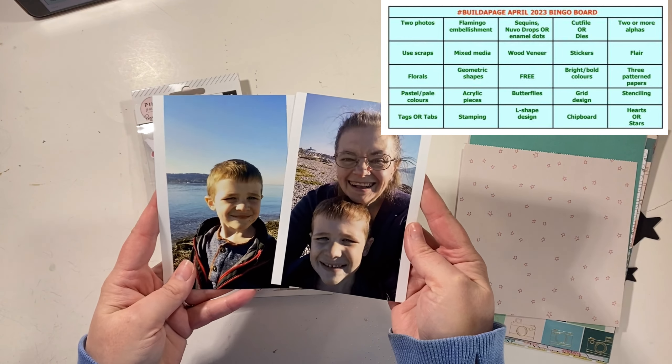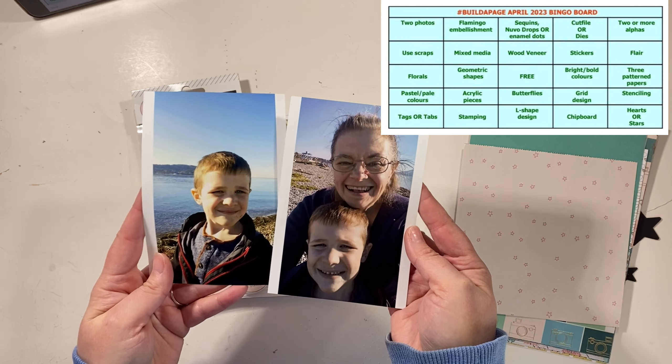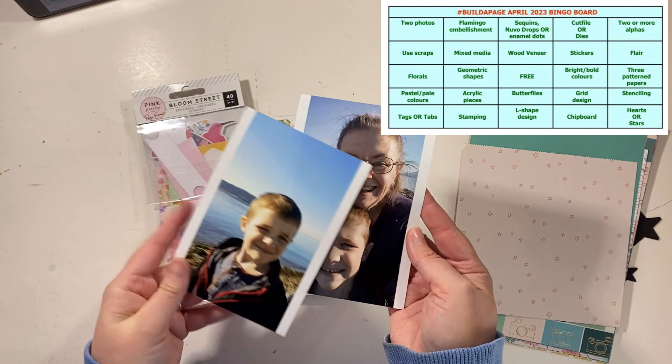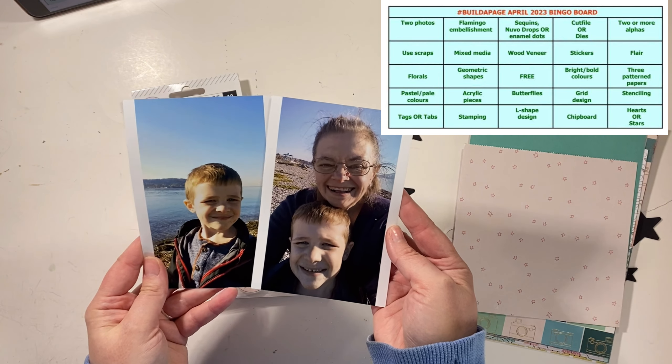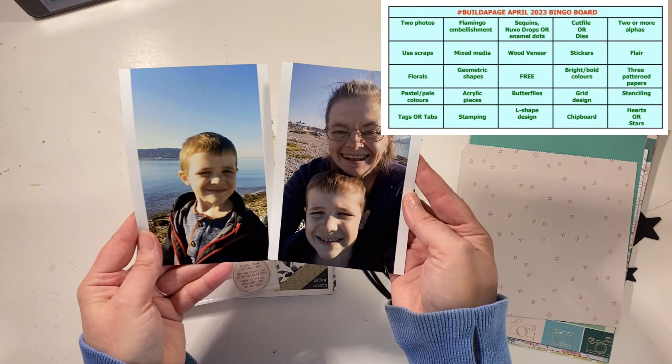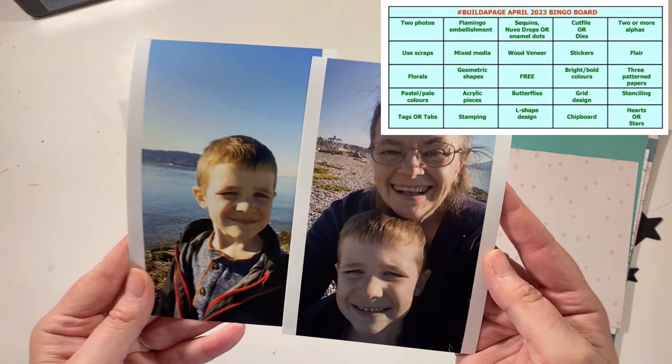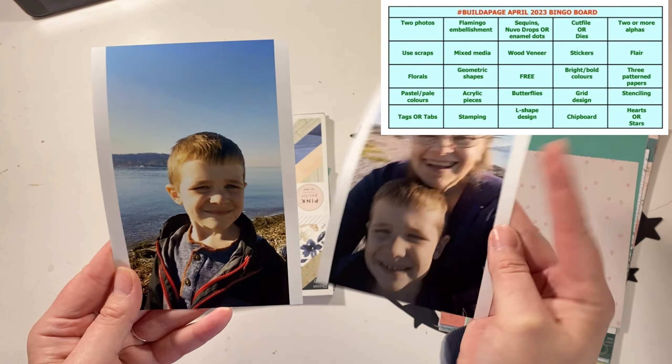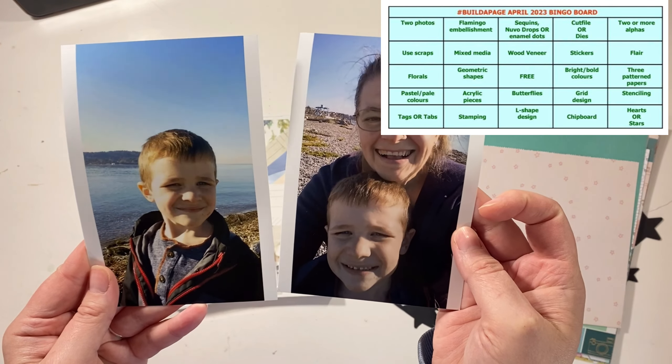The first one we're going to work with is two photos, use scraps, florals, pastel colors, and tags or tabs. I have my two photos. They are from a couple years ago when Jackson was with my mom and they went to Lummi Island for just a little day trip when he was staying with my mom for a little bit. I really love them. I think the photos are just so cute and my mom was taking a selfie, which I love.